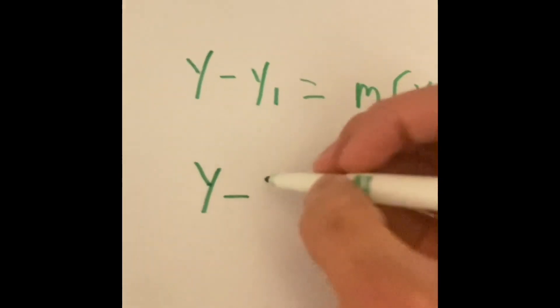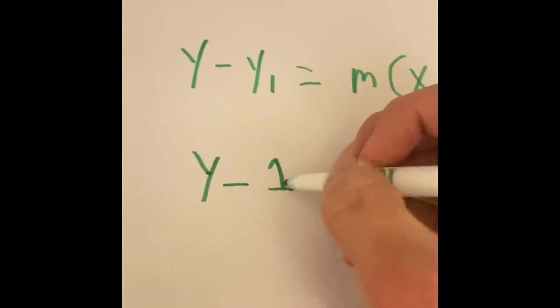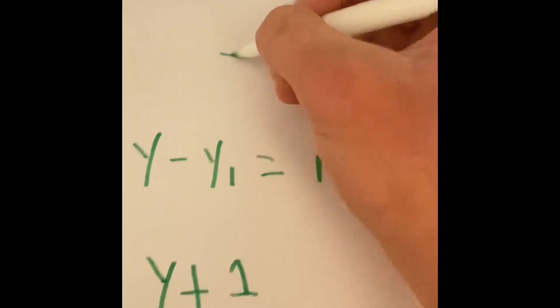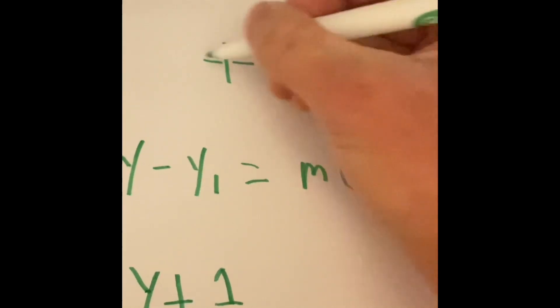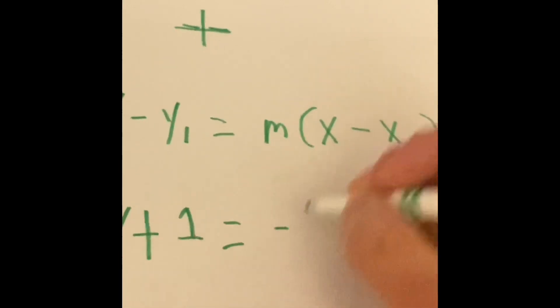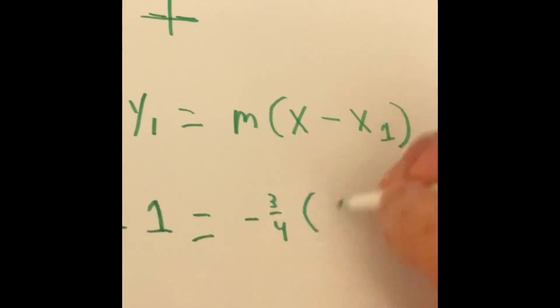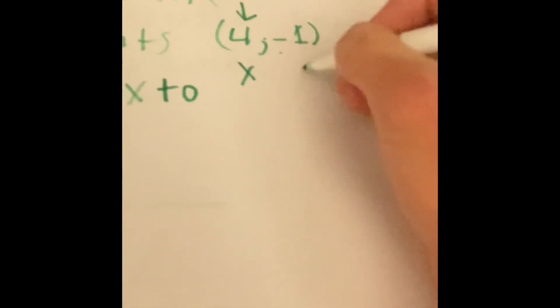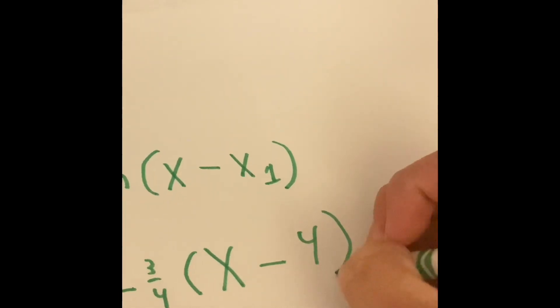Since y1 is negative 1, we put 1 here, but you have to make it a positive symbol because a negative minus a negative is now a positive. It's going to equal our slope, negative 3 over 4, so we put negative 3 over 4 in parentheses times x minus our first x, which is 4, because the first value is x and the second is y in a point.